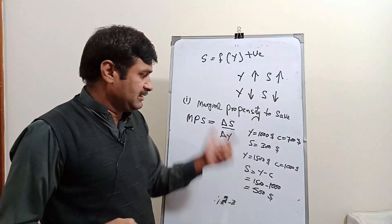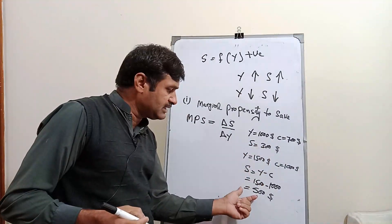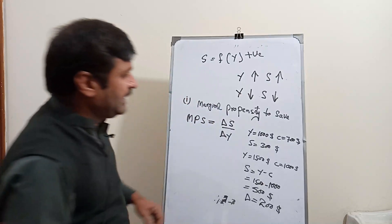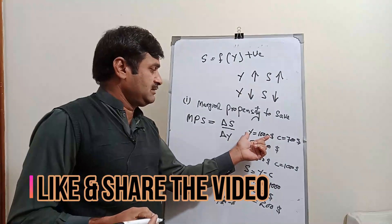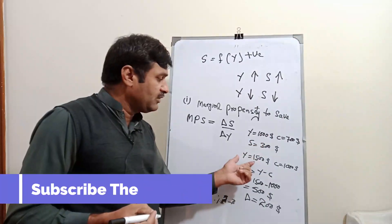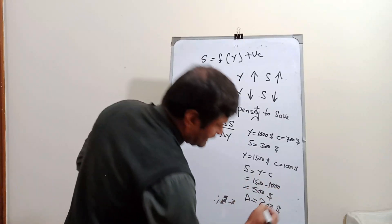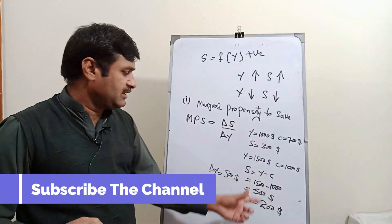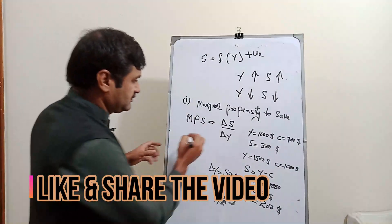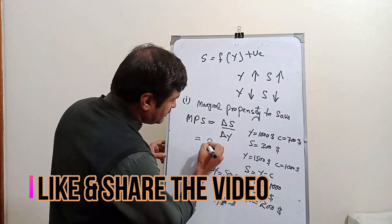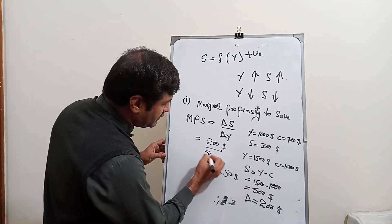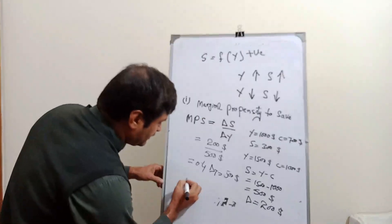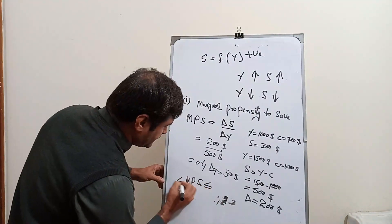So what is the change in saving? First saving was $300 and now saving is $500, so ΔS = $200. Change in income ΔY = $500. Putting the values into the formula: MPS = ΔS / ΔY = 200 / 500 = 0.4. It should be noted that MPS always lies between 0 and 1.